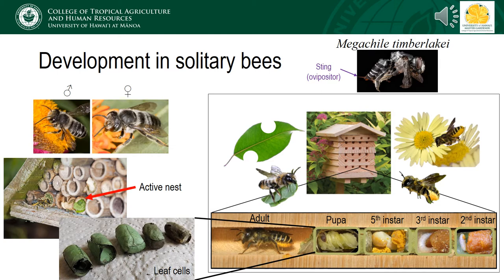This means that as opposed to living in a colony and working as a group, individual females are responsible for reproducing, locating a nest, and provisioning her young. Let's examine this in more detail using the leafcutter bee, Megachile timburlacea, which was introduced to Hawaii from the Pacific Islands and is currently established on Hawaii, Kauai, Lanai, Maui, and Oahu Islands.